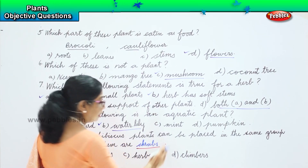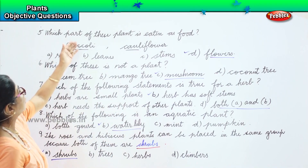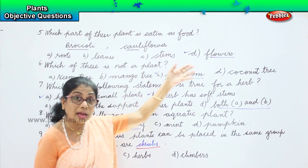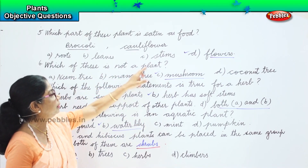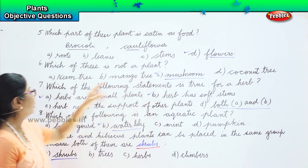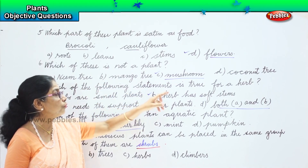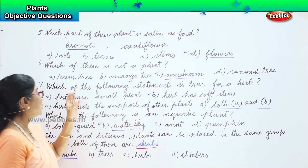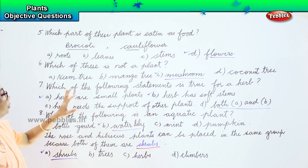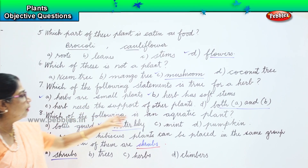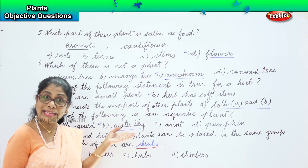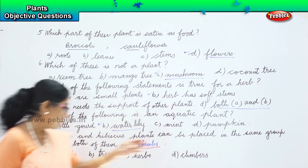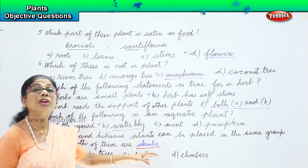Now let's read the questions and answers together. Which part of this plant is eaten as food? Broccoli, cauliflower — flowers. Which of these is not a plant? Mushroom is not a plant. Which of the following statements is true for a herb? Herbs are small plants — correct. Herbs have soft stems — correct. Both option A and option B are correct. Which of the following is an aquatic plant? Water lily is an aquatic plant. The rose and hibiscus plants can be placed in the same group because they both are shrubs.